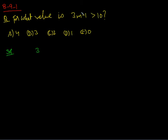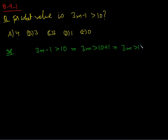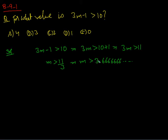To answer this question we can use two methods. The first is straightforward: we solve the inequality. We have 3m minus 1 should be more than 10, so 3m is more than 10 plus 1, which simplifies to 3m is more than 11, giving us m is more than 11 over 3.